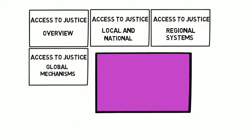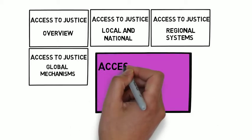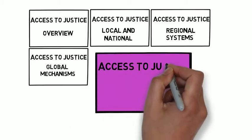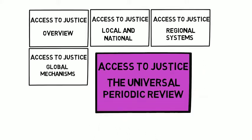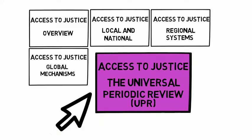Access to Justice – The Universal Periodic Review. In this film we're going to take a look at one way in which civil society can highlight human rights violations at the global level and work for change – the Universal Periodic Review, or UPR.